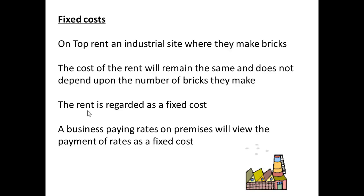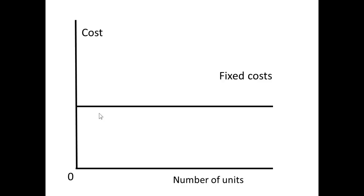In contrast to this, there are fixed costs. If we rent an industrial site where we make the bricks, the cost of the rent remains the same and it doesn't depend on the number of bricks that we make. So in this case, we say that rent is a fixed cost. A business paying rates on premises would view the payment of rates as a fixed cost in exactly the same way. If we plot costs against number of units, with fixed costs it's simply a straight line.